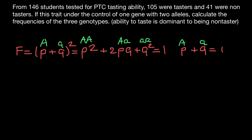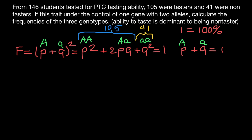Now let's return to our problem. From 146 students, 105 were testers, meaning they belong to the homozygous dominant or heterozygous genotypes — 105 such people. And 41 are non-testers, meaning they belong to the homozygous recessive genotype — 41 people. But these are absolute numbers of people.